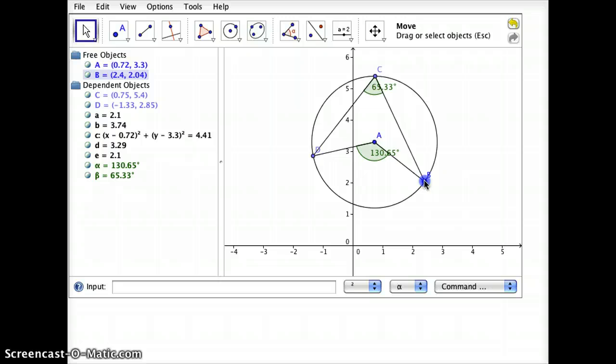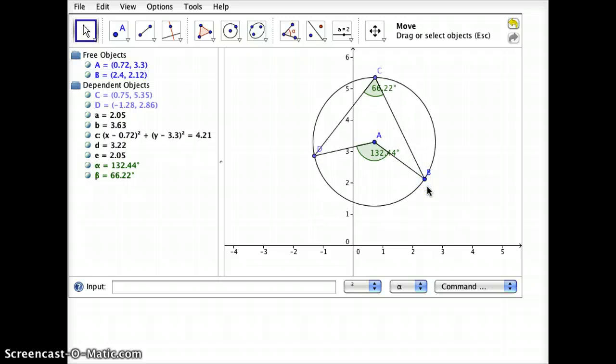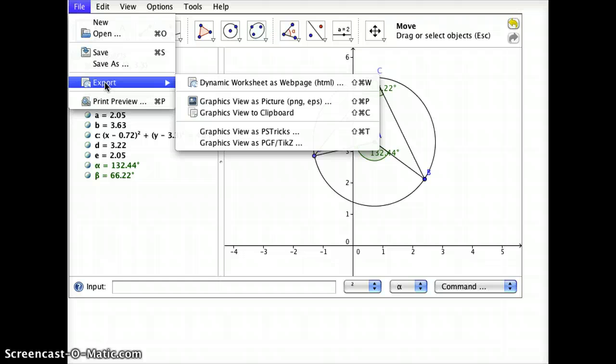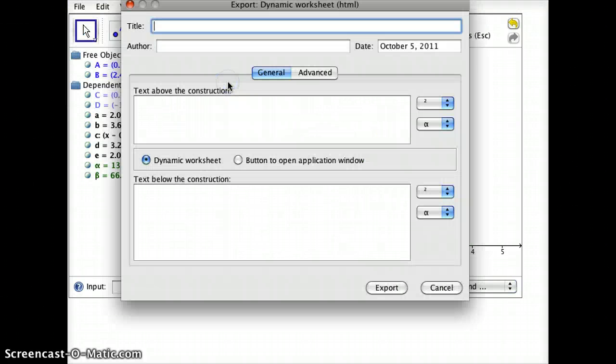Now, this is really neat and it's interesting to watch in a video, but it would be really great in my Moodle classroom if the students could play with this on their own. So I'm going to actually set that up. What I'm going to do is I'm going to go up to File and on my File menu, I'm going to choose Export. Under Export, what I want to choose is Dynamic Worksheet as Webpage, and it will take me to an export window.